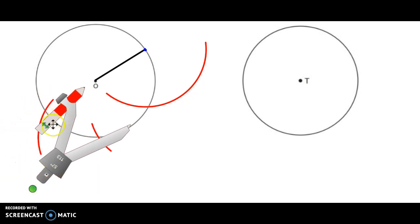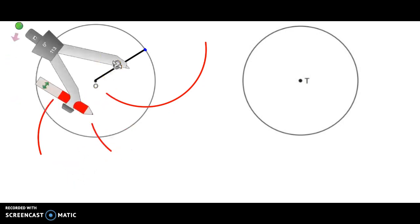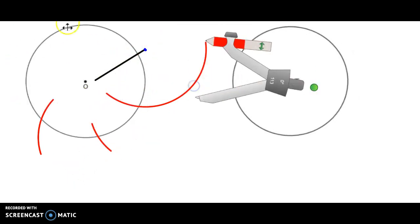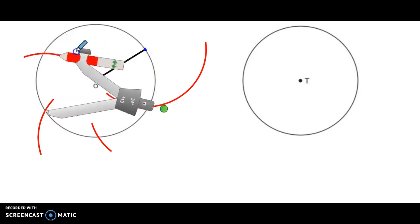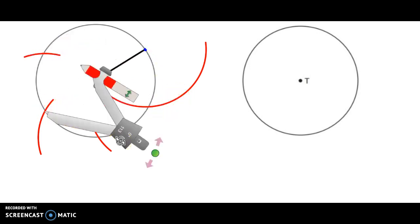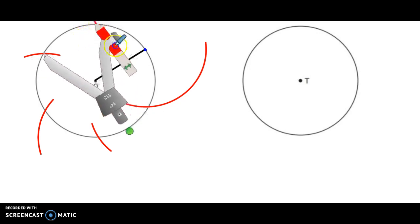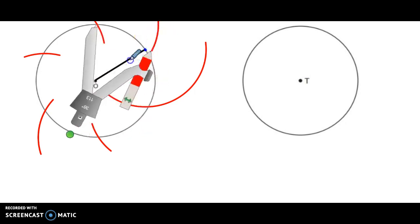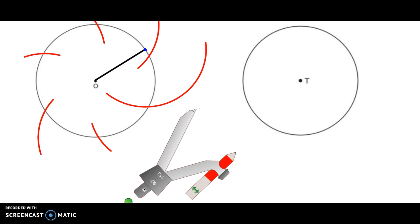And we repeat this process all the way around. Transfer it to the next one, make an arc. Transfer it to the next one, make an arc. So I now have six arcs that intersect the circle.